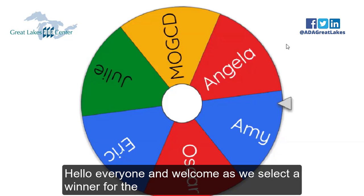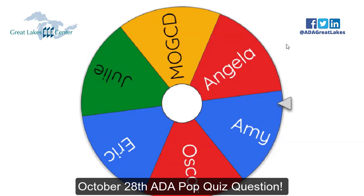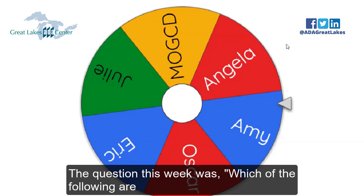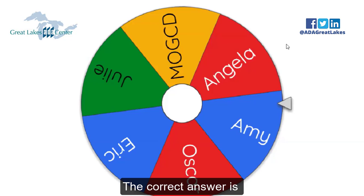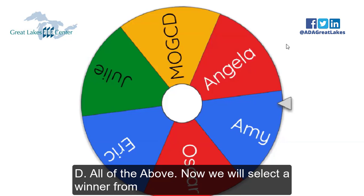Hello, everyone, and welcome as we select the winner for the October 28th ADA pop quiz question. The question this week was, which of the following are examples of reasonable accommodations under the ADA? The correct answer is D, all of the above.